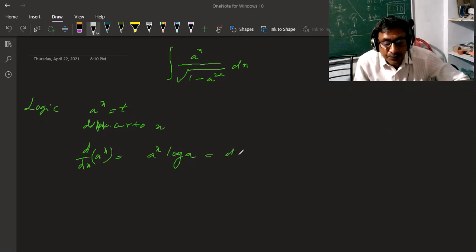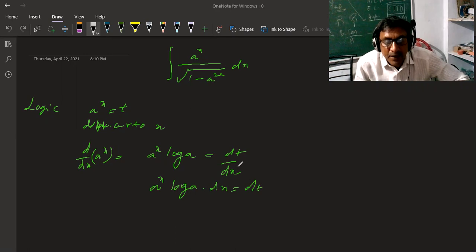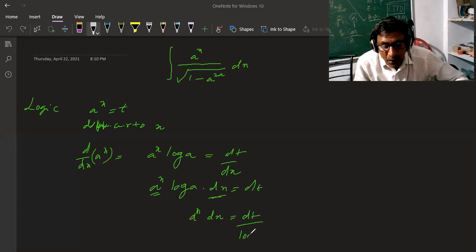Then dt by dx. t equals a power x, so dt by dx equals a power x into log A. Therefore, a power x into log A into dx equals dt, which means a power x into dx equals dt by log A.